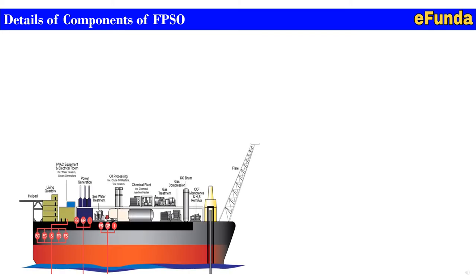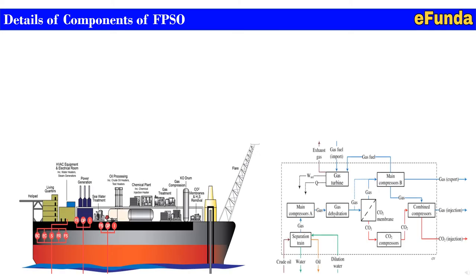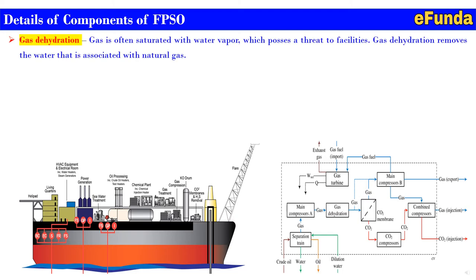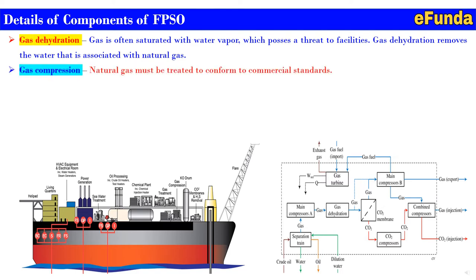Details of components of FPSO — refer to the picture of FPSO and a block diagram where critical components are described. Some of the critical components we will discuss in this slide. First, gas dehydration: gas is often saturated with water vapor which poses a threat to the facility. Gas dehydration removes the water that is associated with natural gas. Gas compression: natural gas must be treated to conform to commercial standards.